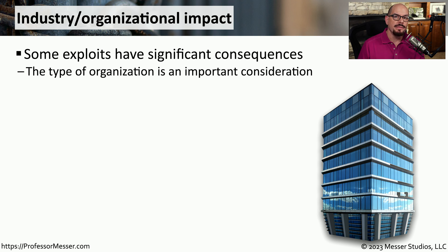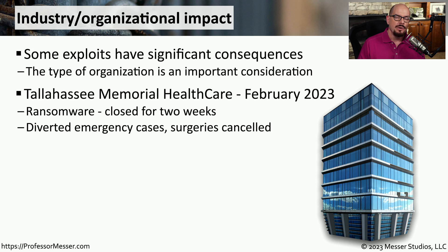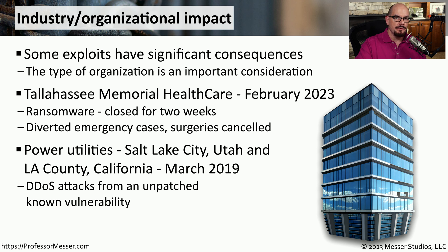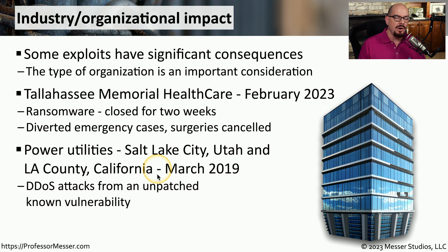The impact can also be very different depending on the type of organization. Some organizations are much more sensitive to any type of outage than others. For example, Tallahassee Memorial Health Care in February of 2023 was hit with ransomware and was closed for two weeks — they had to divert all emergency cases to different hospitals and cancel all scheduled surgeries. There are also different considerations for power generators; in March of 2019 in Salt Lake City, Utah, and LA County, California, distributed denial of service attacks brought systems down for both organizations. The same exploit could have a very different effect across different types of organizations.